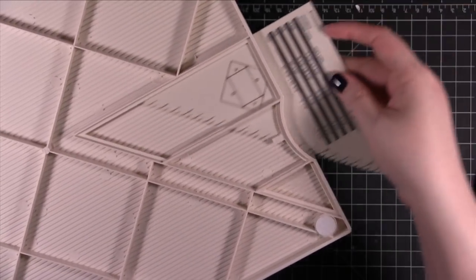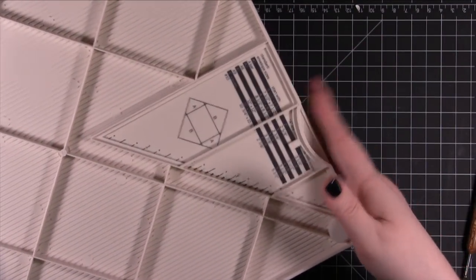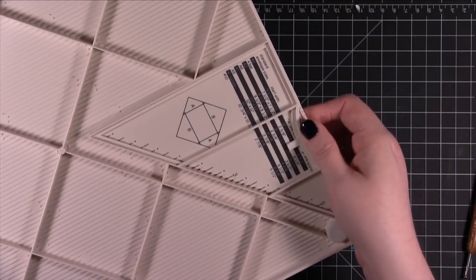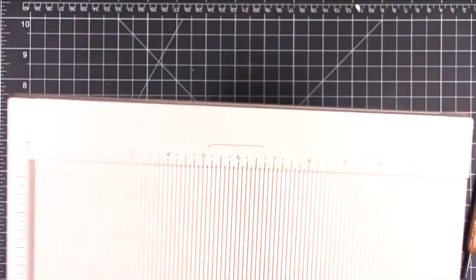You can store it just right here. Just slide that in. It always stays there. You won't ever lose it. That's what I kind of like. You can pull that out and then use that to score your envelopes.